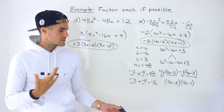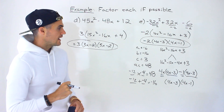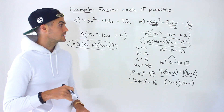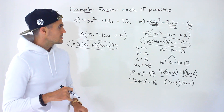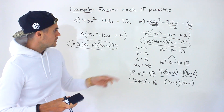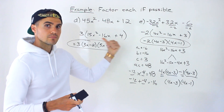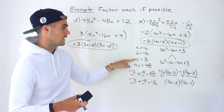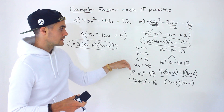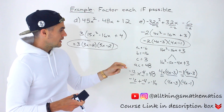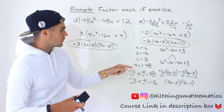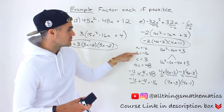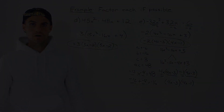Always check for a greatest common factor first, then see if any remaining quadratics factor by decomposition. So far we've covered B positive and C positive in the previous video, and B negative with C positive in this video. In the next video we'll cover a mix — where B and C can each be positive or negative.